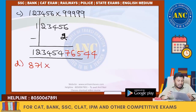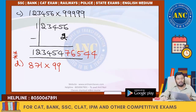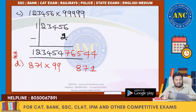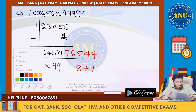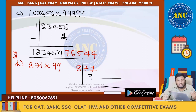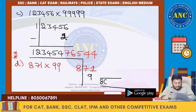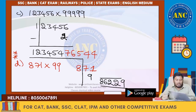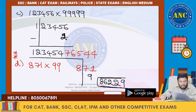D. 871 into 99 — put a star mark on this one. You may get a doubt here. 99 contains 2 nines, so keep the slash after 2 digits. Add 1: 9 is subtracted from 871, not from just 71. 871 minus 9 is 862. Right side: 9 minus 7 is 2, 10 minus 1 is 9. Answer: 86229.